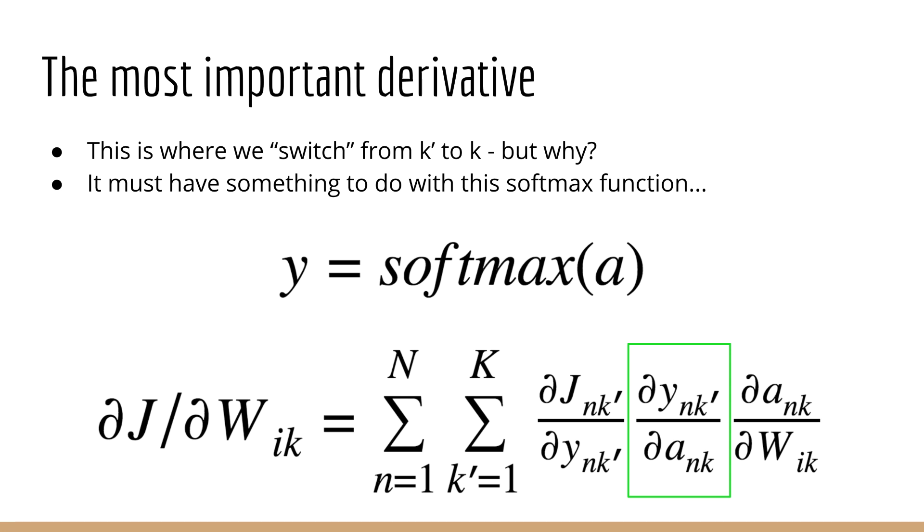The most important derivative here, I think, is the middle derivative, d of y and k prime by d of a and k. This is, of course, because that's where the boundary is, where we switch from k prime to k. Now you might ask, why do we switch from k prime to k? Good question, and this is important. If you recall, y is just the softmax of a. So now you realize there's something non-trivial about this softmax function that we have to deal with. This is also, by the way, why you learn about binary logistic regression before you learn about multiclass logistic regression, which is quite a bit more difficult.